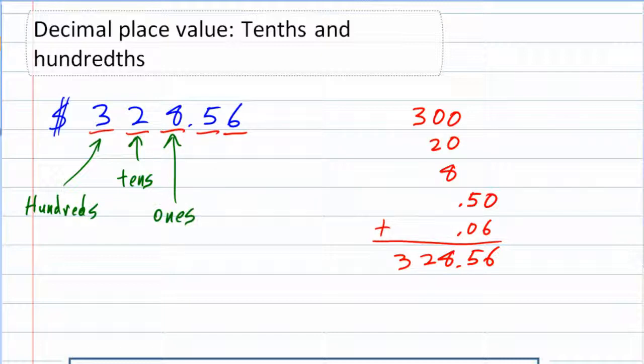And then on the right-hand side, our decimals there, that's our change. So the five dimes, a dime is worth a tenth of a dollar. So those are tenths.